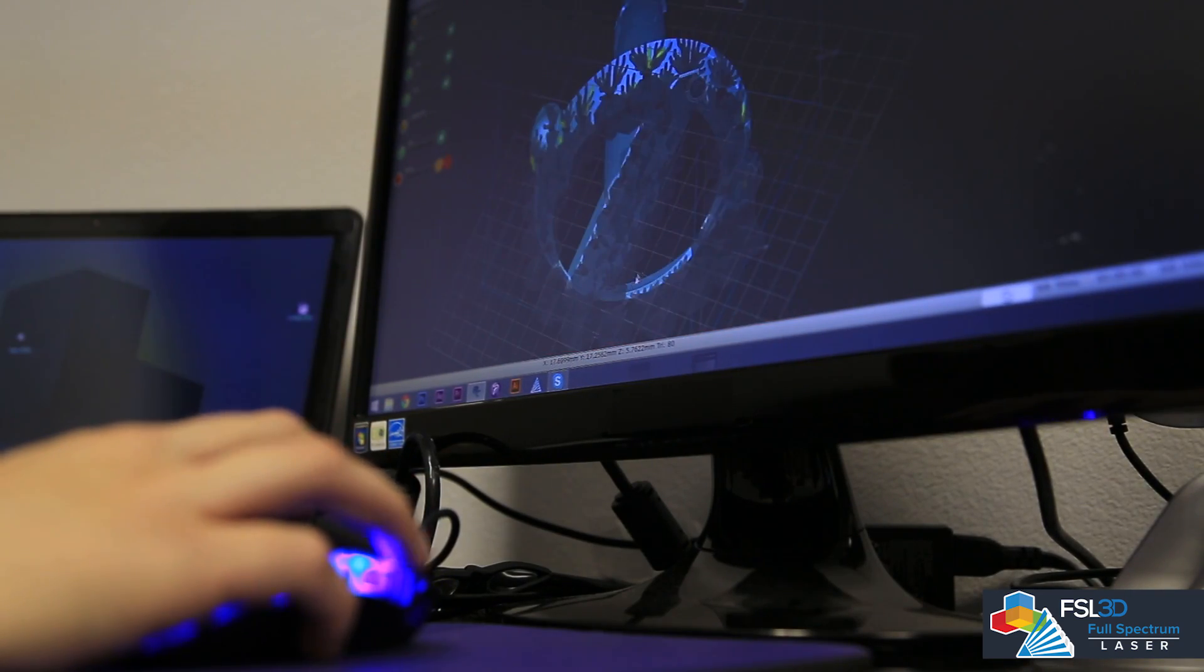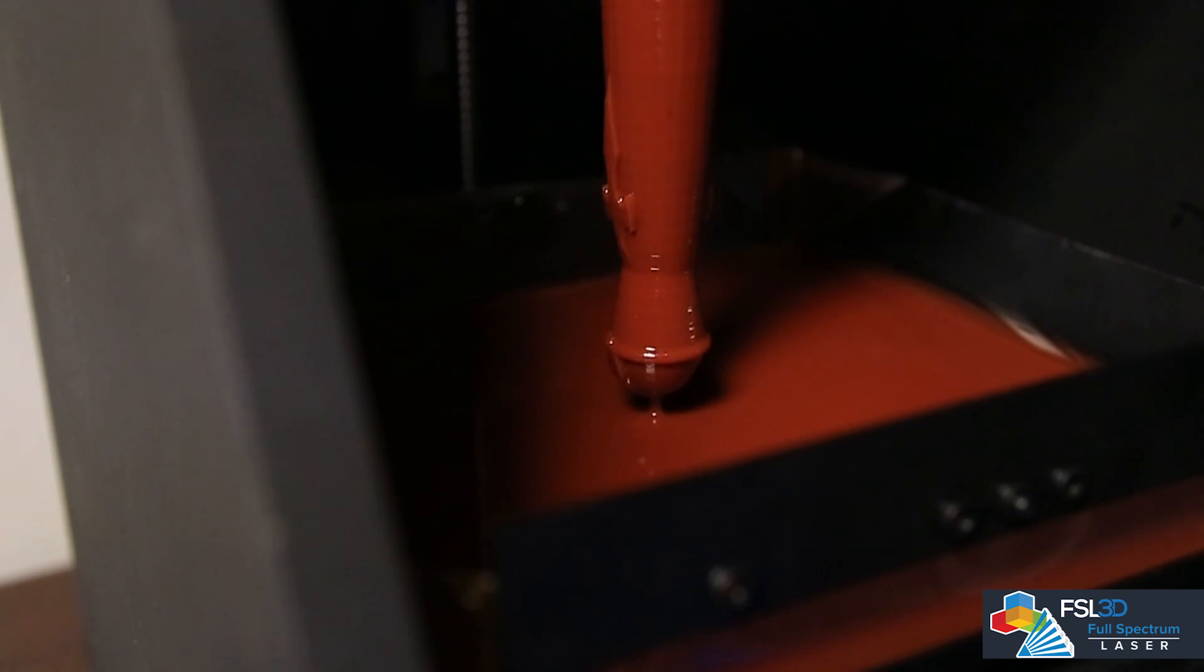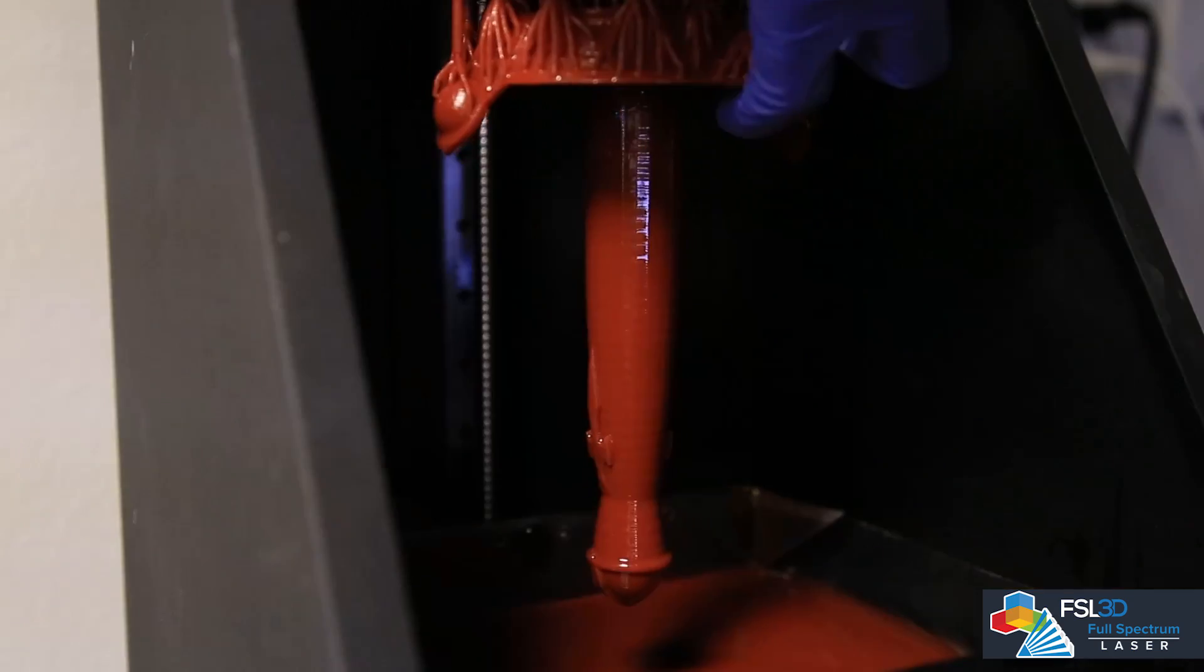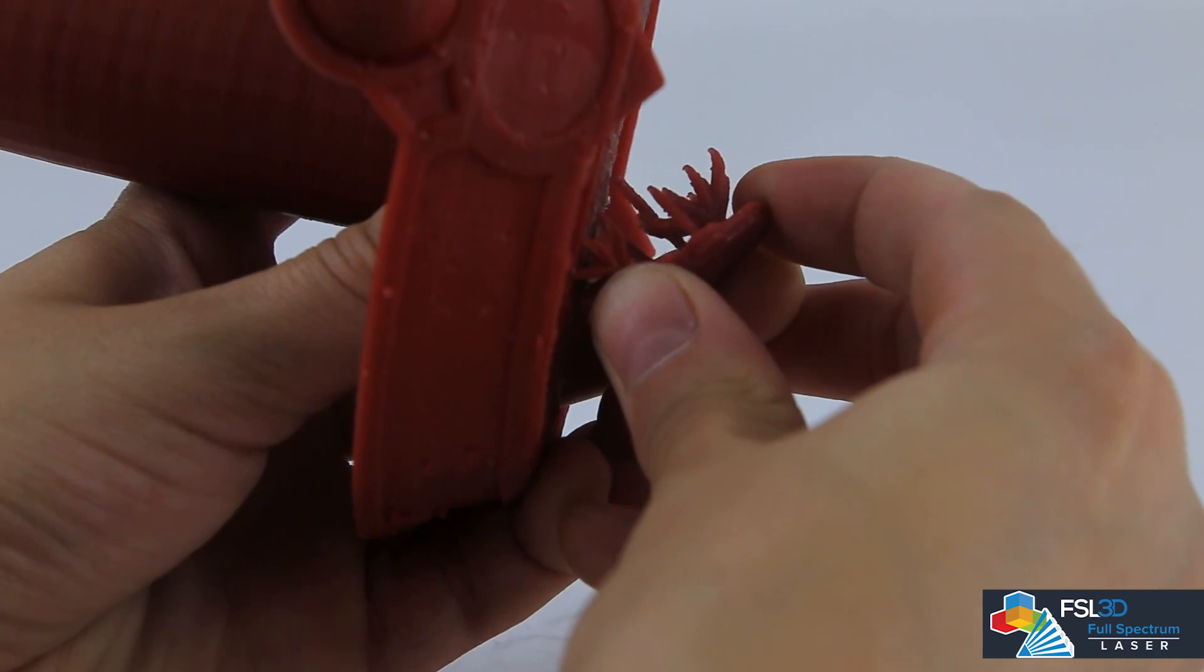Next, support and 3D print your handle. Break off your supports and sand away any remaining support material.